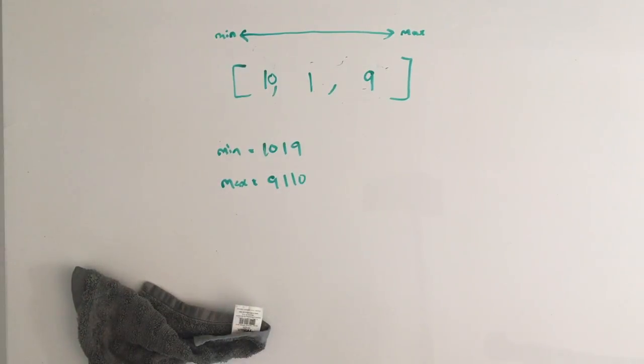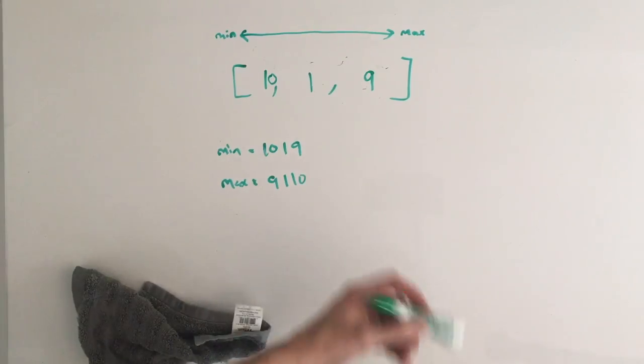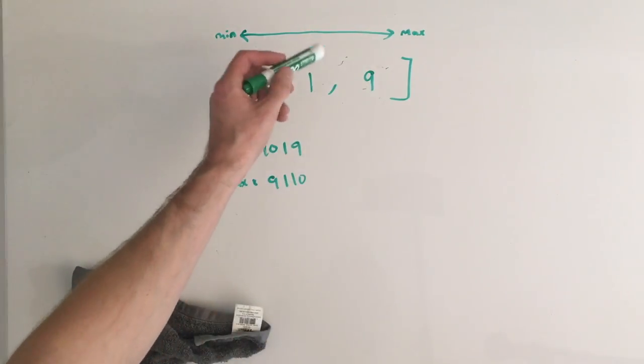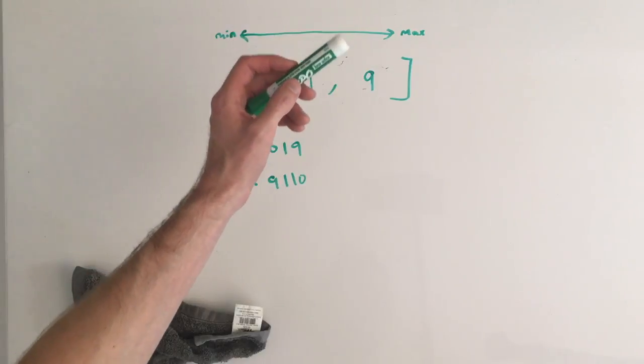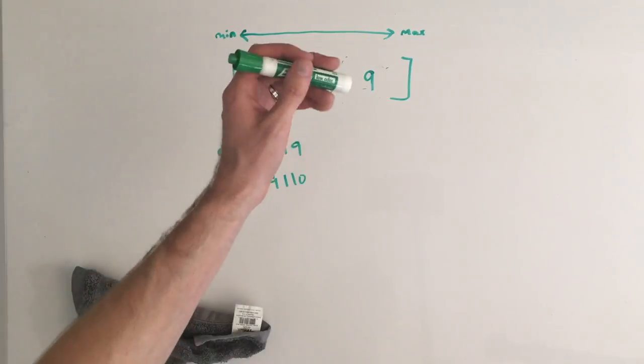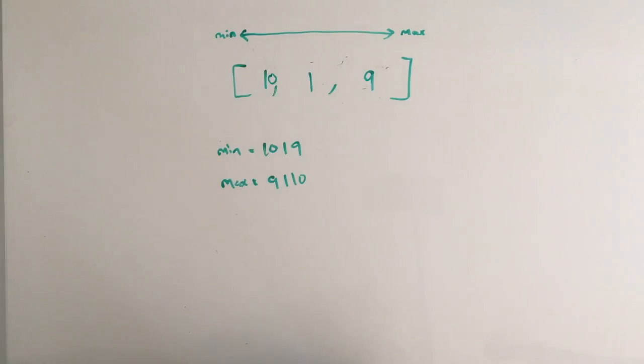One more time, the recap is the problem can be solved by sorting the array, and the hard part is figuring out the function to sort the array by. And it turns out our function, what we need to do is just concatenate A with B and then check if it's less than concatenating B with A. So let's go ahead and implement this in JavaScript.